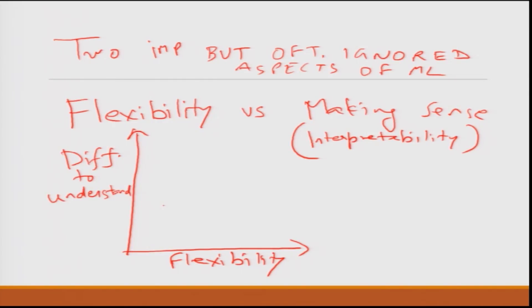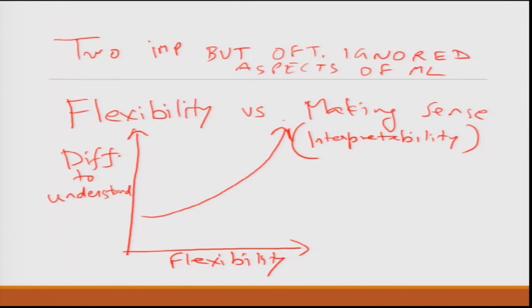If I have to roughly plot this on a graph, if I plot flexibility of the model versus difficult to understand, you will find that apart from very rare cases, it is almost this curve which means that as you make the model more flexible, by flexible I mean you have more parameters that adjust to give you the final results, there are more ways in which the parameters interact and adjust with each other.